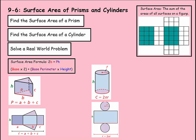For example, we have a prism here that has been unfolded. These darker spaces are the bases, and these are the four faces of that prism. The surface area would be the square units of all these surfaces.